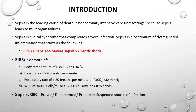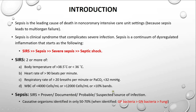It is also important to mention that the causative organism is only identified in 50 to 70 percent of patients. When that organism is identified, it is most commonly a gram-positive bacteria, followed by gram-negative bacteria, and then fungi. Those are the three most common causes of sepsis when discovered.